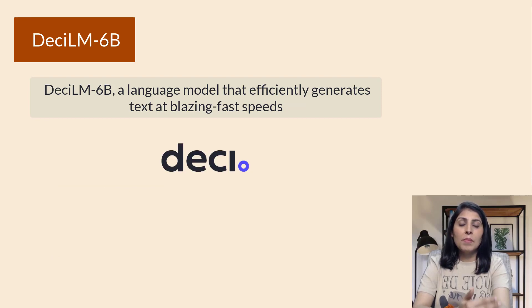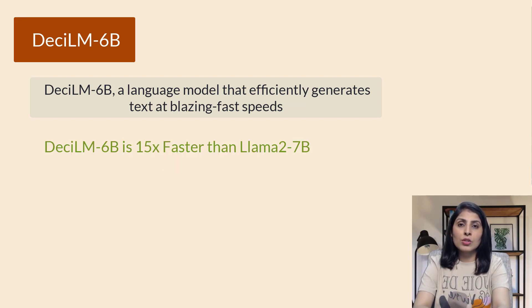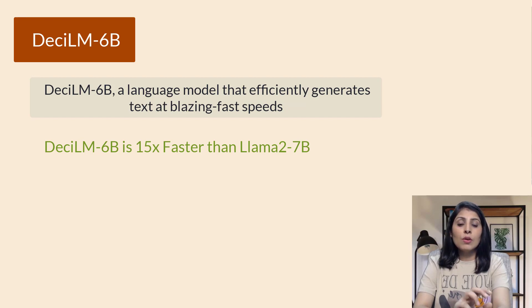Large language models are getting better and better thanks to the dedicated effort of brilliant minds. But there has always been a challenge that they need lots of computer power, which comes with a hefty price tag. Now, Desi has introduced an open-source LLM which is 15 times faster than LLaMA2, which is a large language model by Meta. This sets a new record for how fast and efficient these language models can be.